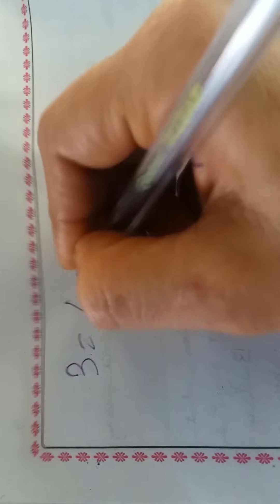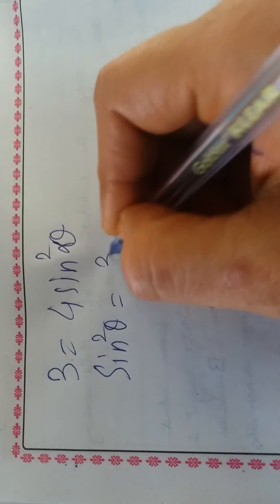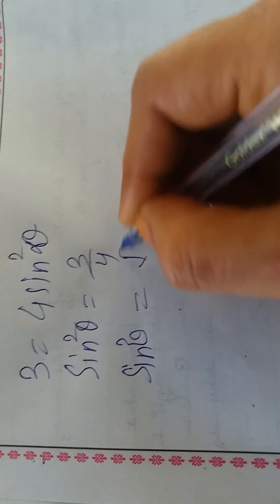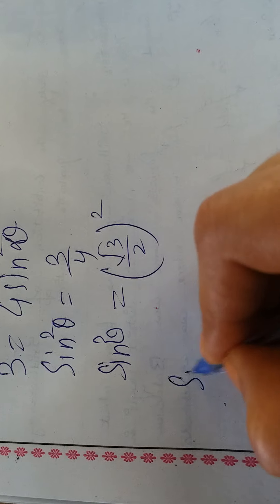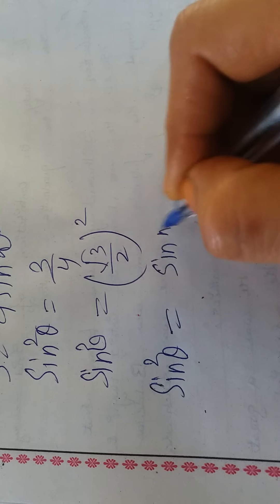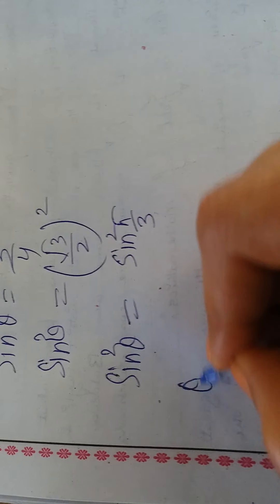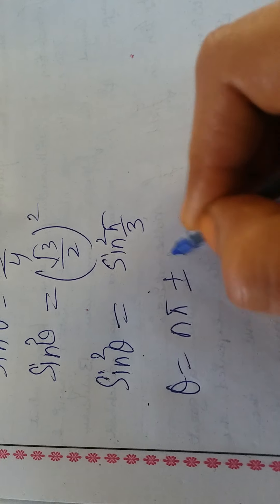From 3 = 4sin²θ, we get sin²θ = 3/4, which equals (√3/2)². Since sin(60°) = sin(π/3) = √3/2, we have sin²θ = sin²(π/3). Applying the formula, θ = nπ ± α where α = π/3.